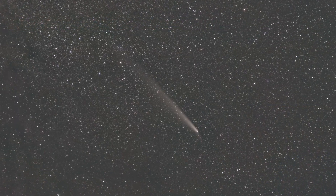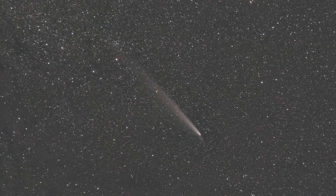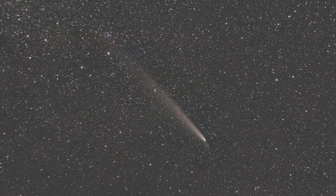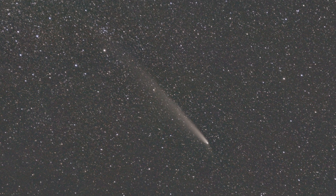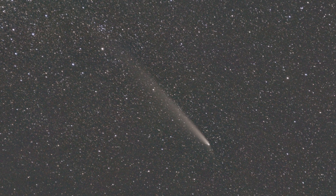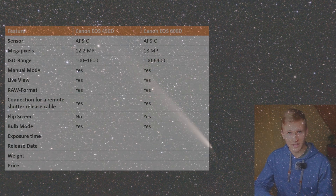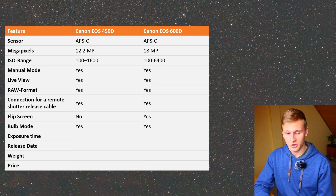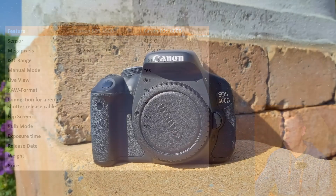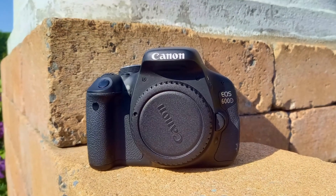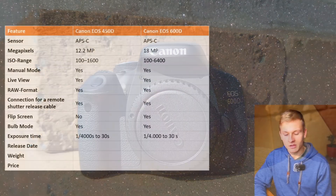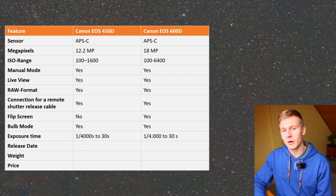Bulb mode is important because it allows you to use exposure times longer than 30 seconds, which is necessary for deep sky astrophotography with a tracking mount. If you're planning to use your camera without a tracking mount, it's less necessary since exposure times need to be shorter. The maximum standard exposure time is the same for both cameras at 30 seconds.